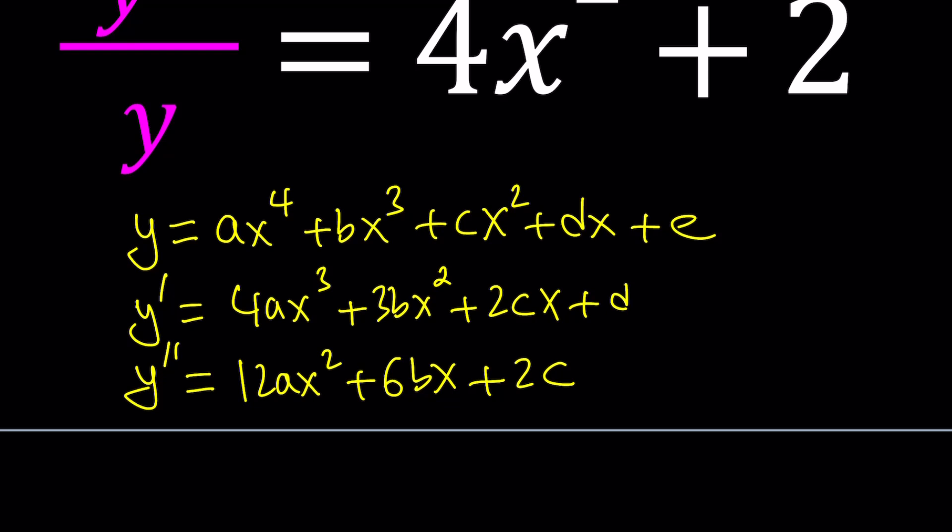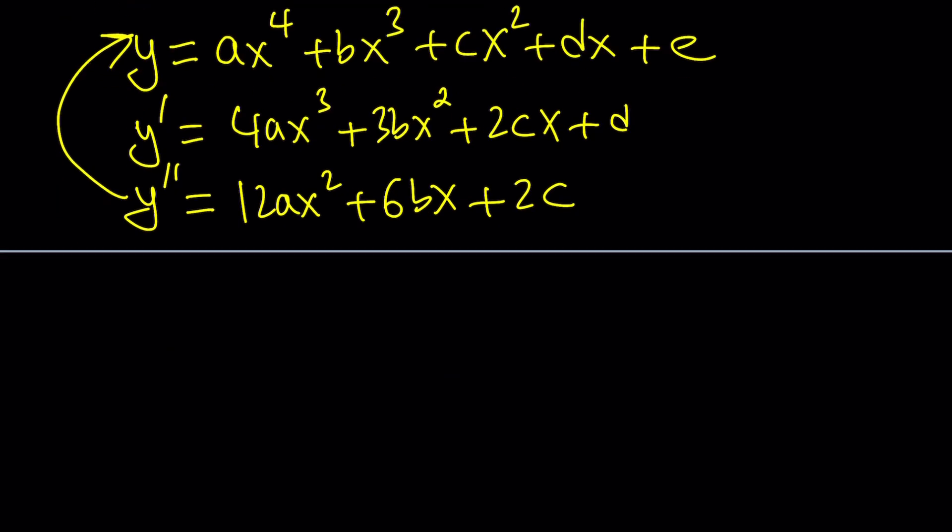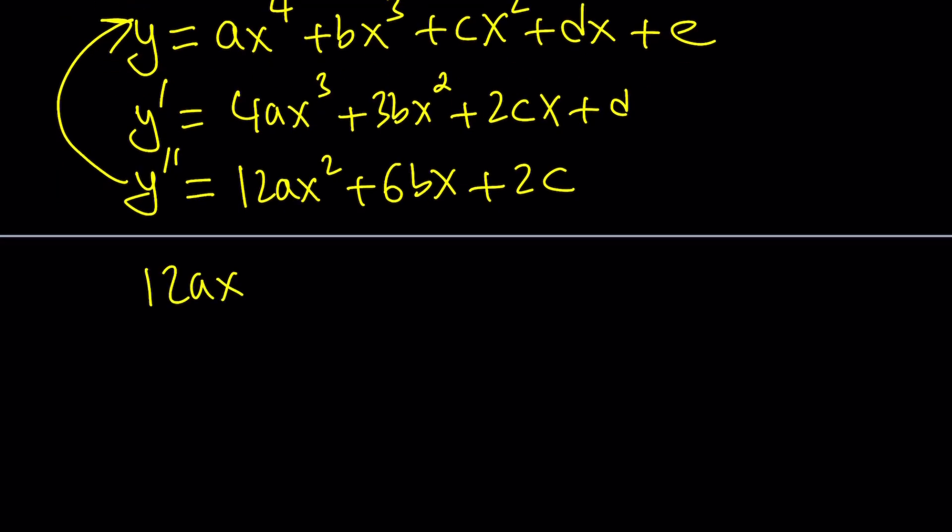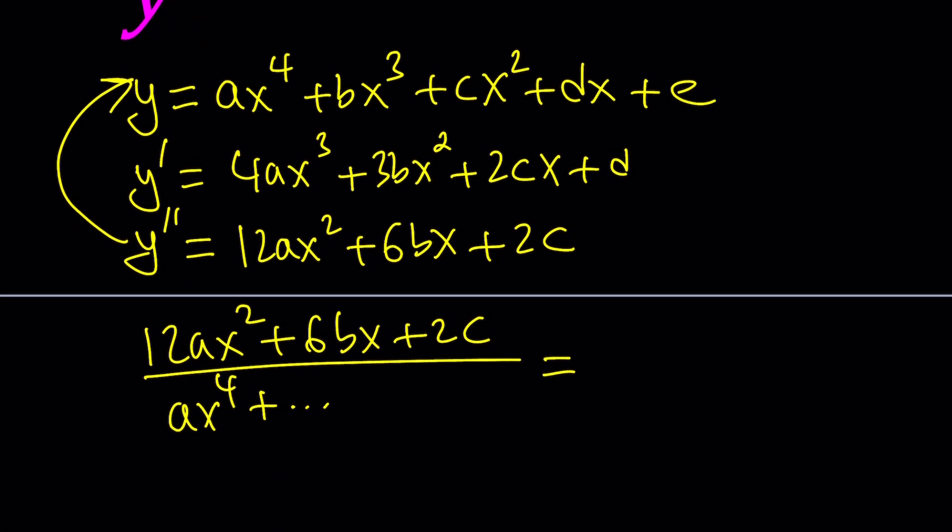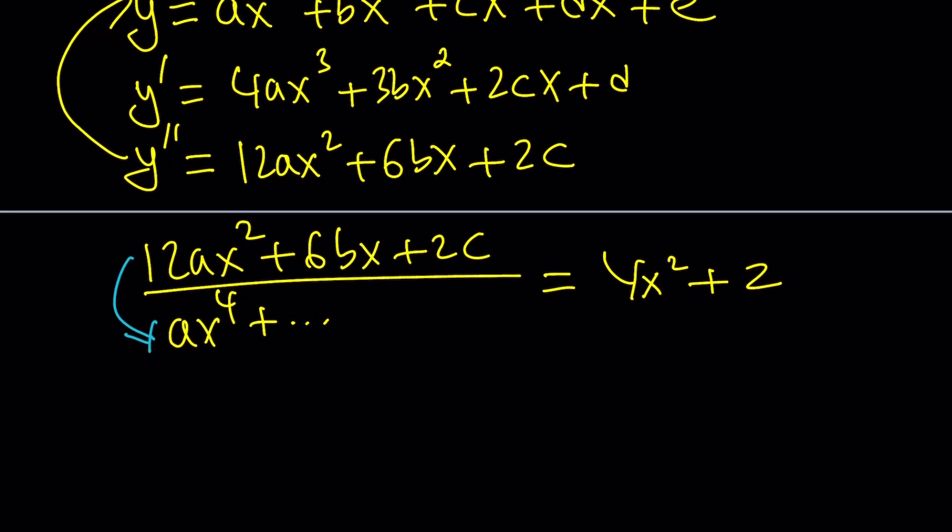Now we're going to look at the quotient or the ratio of these two things. If you divide 12ax² + 6bx + 2c by ax⁴ and so forth, equaling 4x² + 2, that's not going to work. It's actually the other way around. If you divided a quartic by a quadratic, you could expect to get a quadratic, but it's not this way. So it can't be a polynomial.